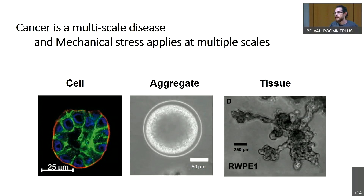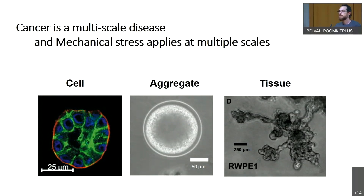Cancer is a multiscale disease — it's a common thinking — and mechanical stress applies at multiple scales. What is mechanical stress? It's the reaction of an object when you apply pressure on it. When you want to deform it, to crush it, it will react by stress. It is the same in psychology: if you apply pressure on an individual, they will react by stress. I will present you three examples at three scales on how mechanics influence cell behavior and cancer evolution.